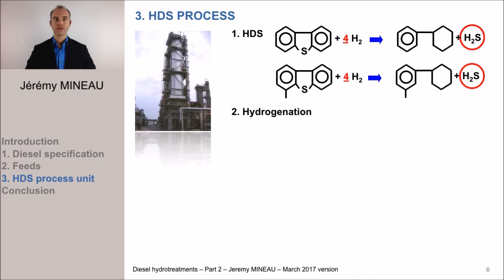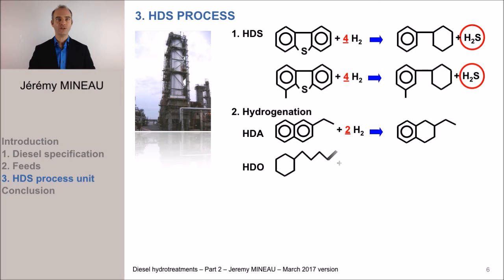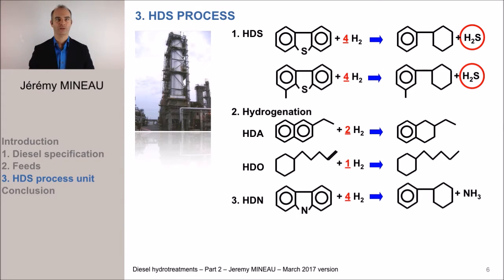In parallel, the aromatics are also going to react with the hydrogen. Molecules presenting several aromatic rings are the most reactive. They will be hydrogenated into mono-aromatic. Always in parallel, olefins are going to be saturated as soon as they will be in contact with the hydrogen molecule. The molecules that contain nitrogen are also going to react with the hydrogen. The nitrogen combines with the hydrogen to produce a molecule of ammonia or NH3.